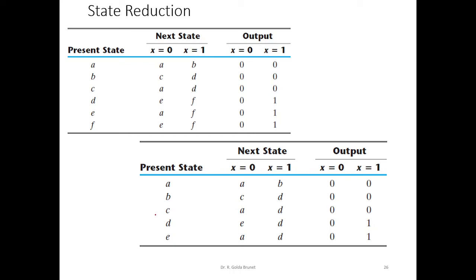We repeat this procedure until we find no other equivalent states. Can we say E and C are equivalent? For input 0 they both transit to A, and for input 1 they both transit to D. But we cannot say C and E are equivalent because the outputs are different. When the input is 1, from C we transit to D and output 0, but from E upon input 1 we transit to D and output 1. Therefore C and E are not equivalent. So this is the reduced state table — we started with 7 states, eliminated 2 equivalent states, and ended up with 5 states.